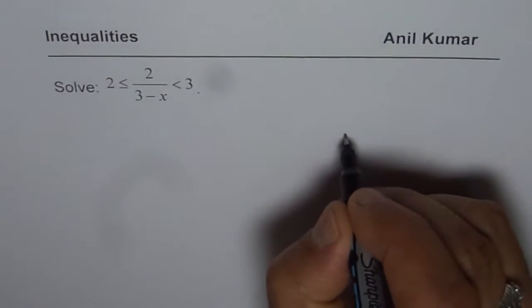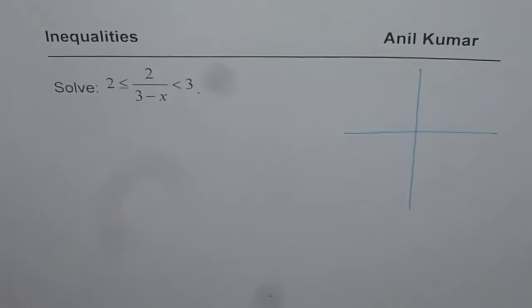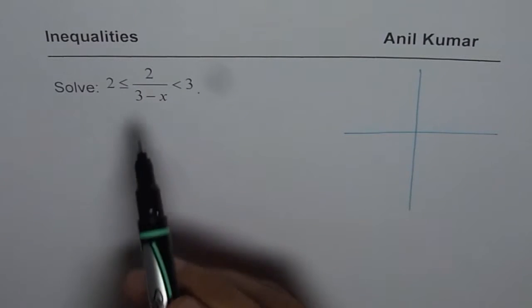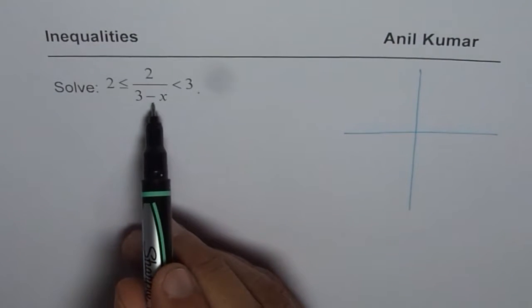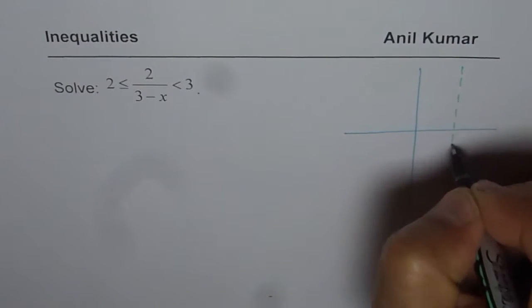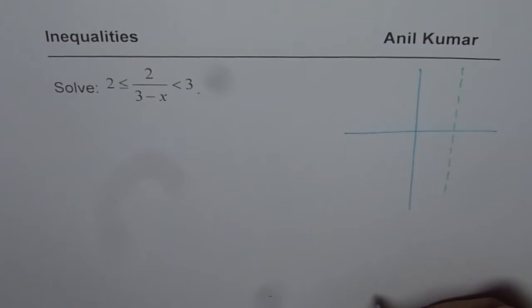Let us look at the diagram — let us sketch the function 2/(3−x) approximately, just to understand how the solution should look. We have 3−x in the denominator, which means the denominator is going to be 0 for x = 3, giving a vertical asymptote at x = 3.